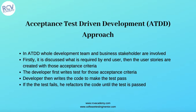Once the acceptance criteria is defined and test cases are derived from it, the developer writes code to make those test cases pass. The developer refactors the code until all the test cases defined for the acceptance criteria pass, continuing until the last test case is passed. This is the overall Acceptance Test Driven Development approach.